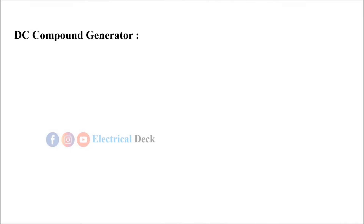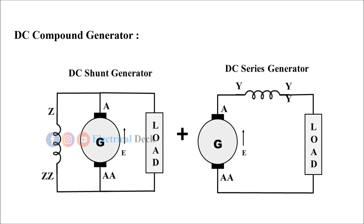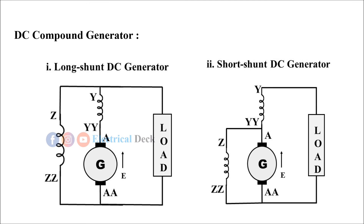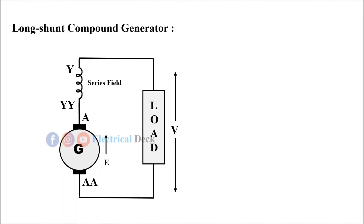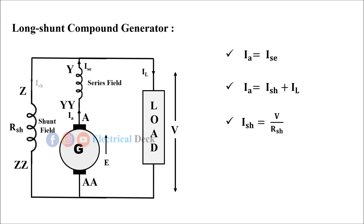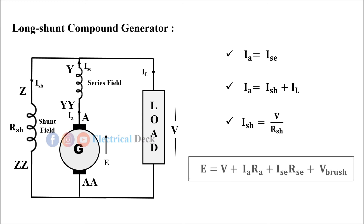The DC compound generator is a combination of both DC shunt and series generators. By this combination of connections, there are two types of DC compound generators: long shunt compound generator and short shunt compound generator. In the long shunt compound generator, the shunt field winding is connected across the series field winding. Series field current equals armature current, and armature current is the sum of shunt field current and load current. The shunt field current I_sh = V / R_sh, and the voltage equation for the long shunt compound generator is the same as the series generator.